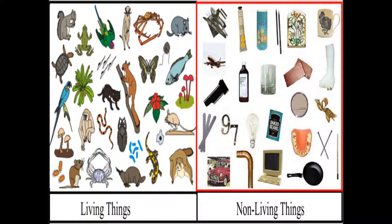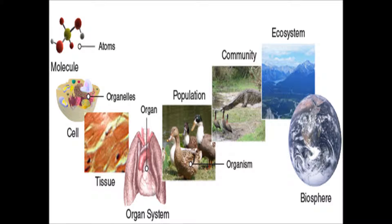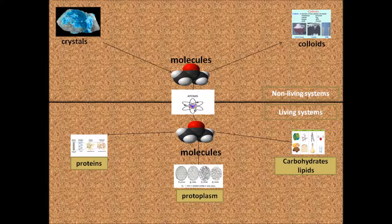In both living and non-living forms, the organization starts from the level of an atom. However, from here onwards, the organization differs. In the case of non-living forms, the organization stops at the level of molecules or proceeds to form crystals or colloids.